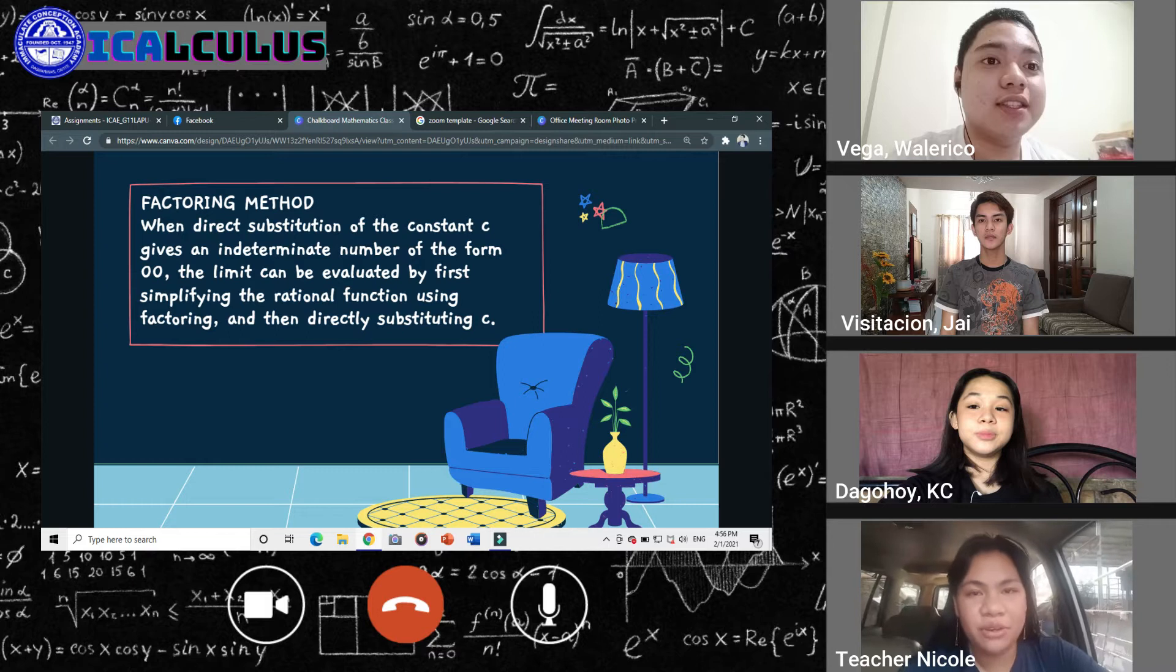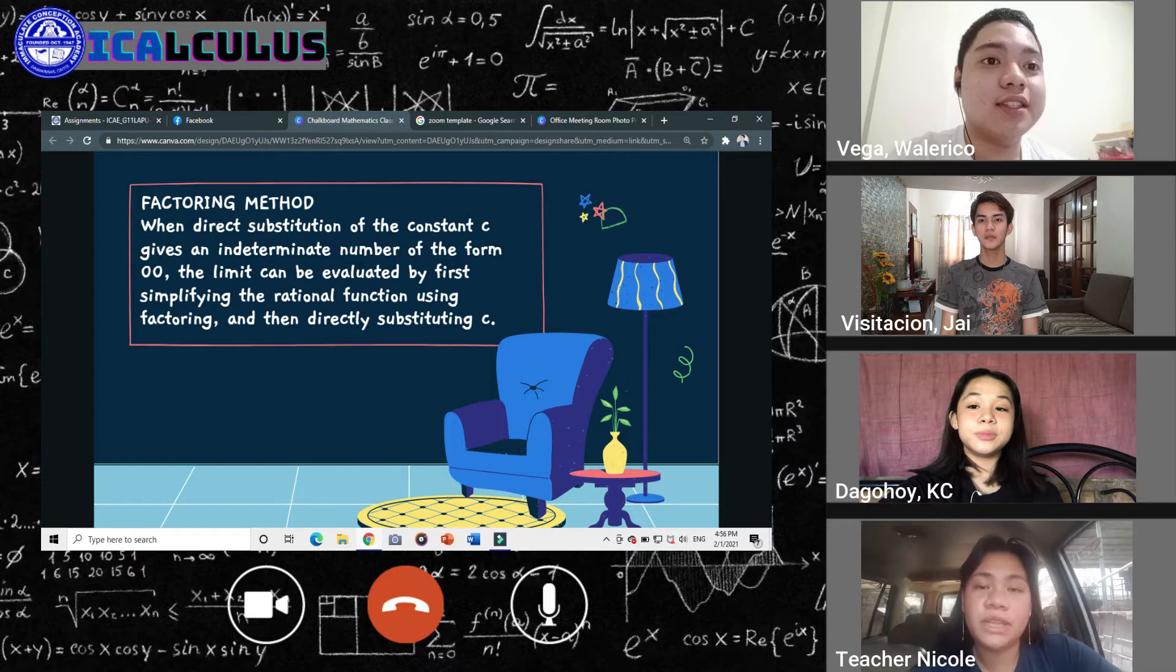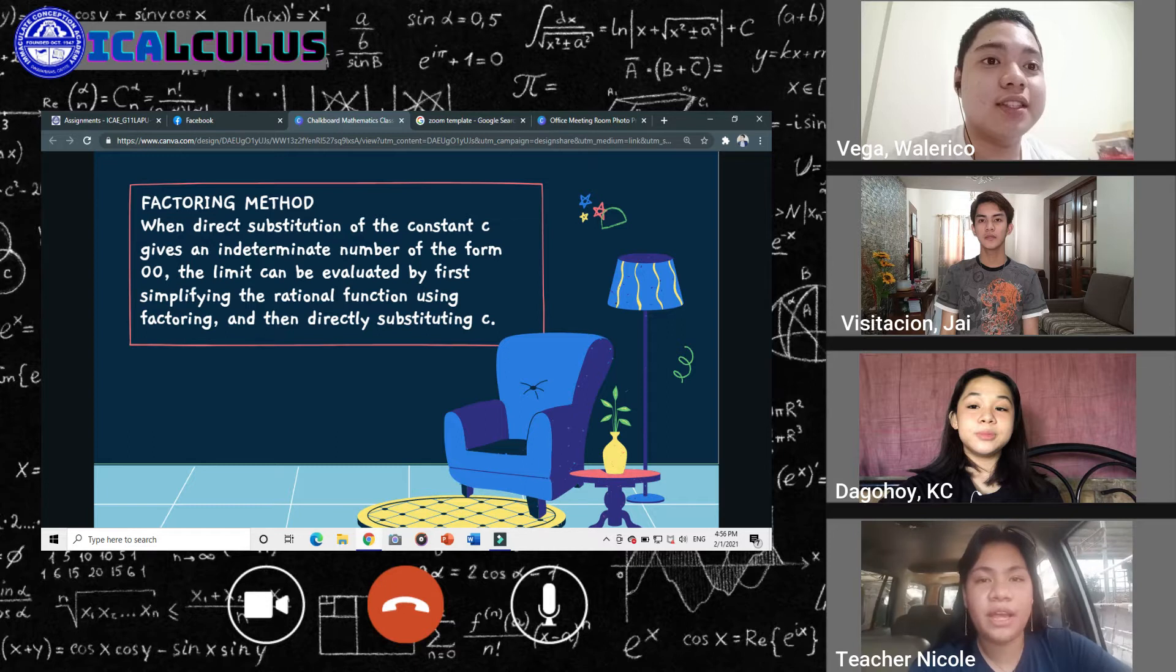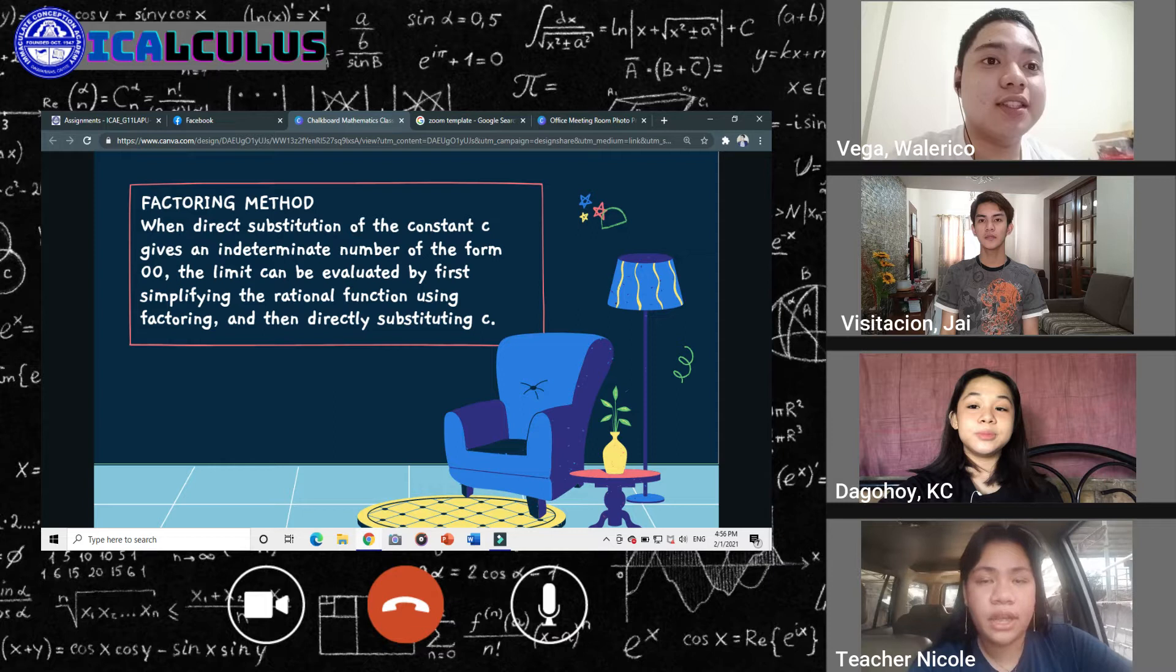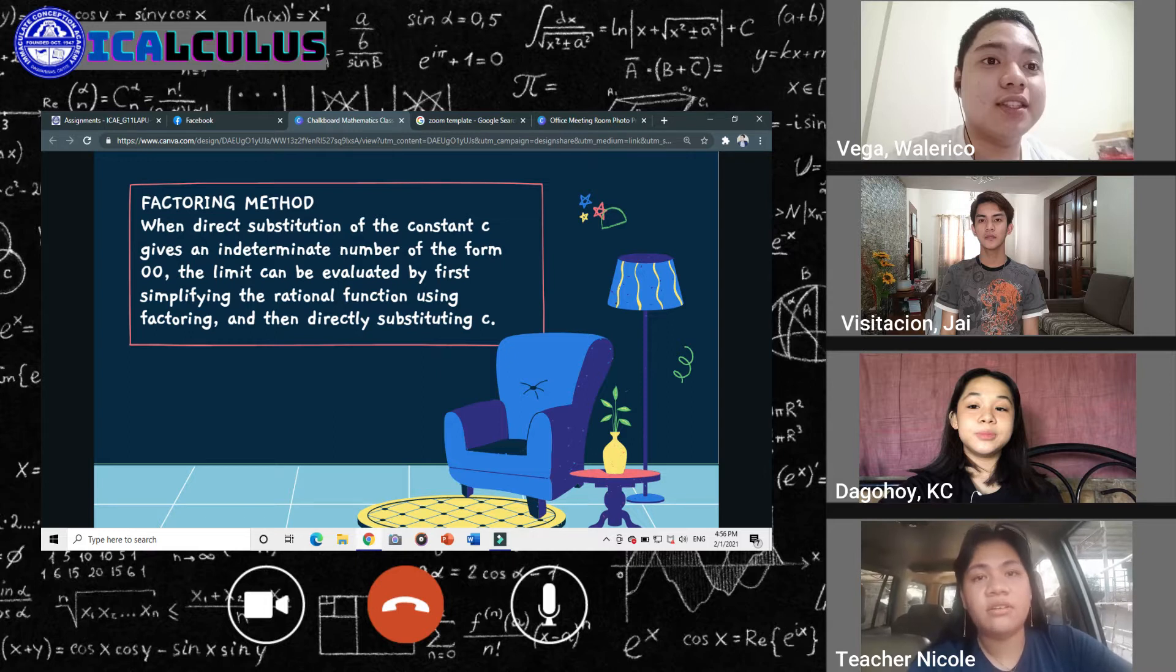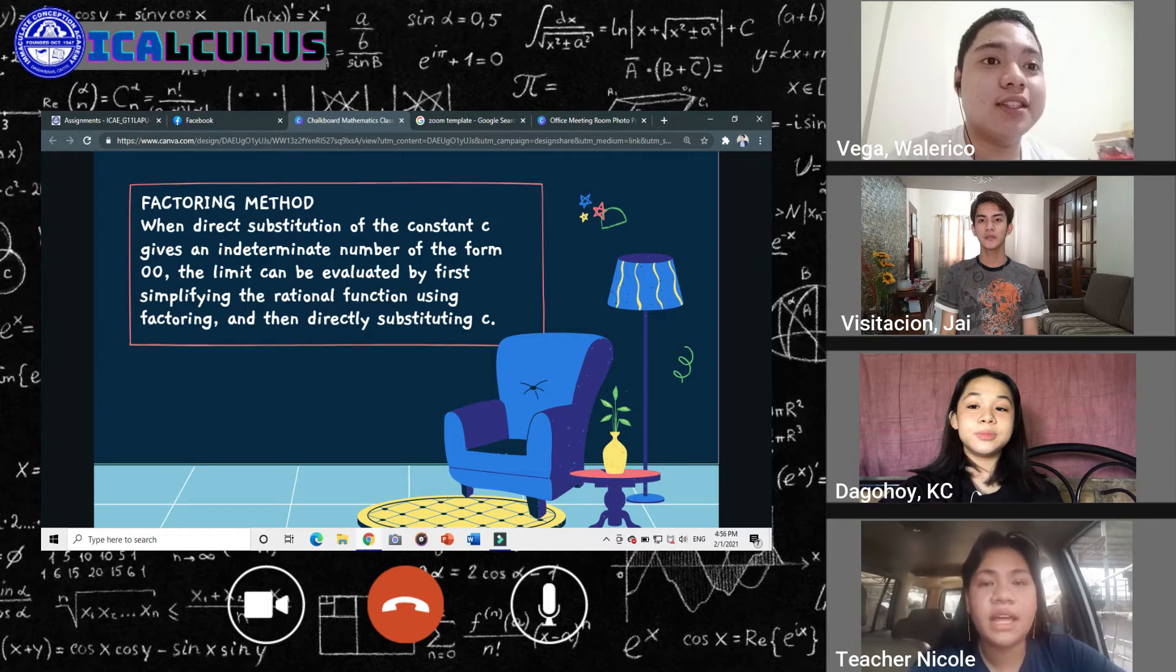So when do we use the factoring method? It says here that when direct substitution of the constant C gives an indeterminate number of 0 over 0, you can first simplify the given rational function through the use of factoring and getting its factors, then directly substituting the constant C. So it is important that you have a great background on factoring a polynomial or a function because that will be useful in this lesson.